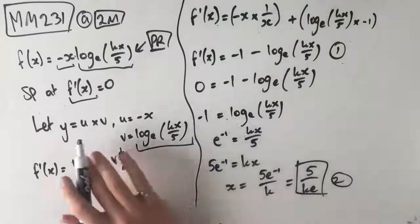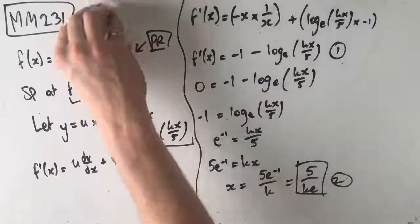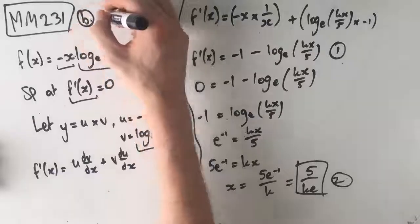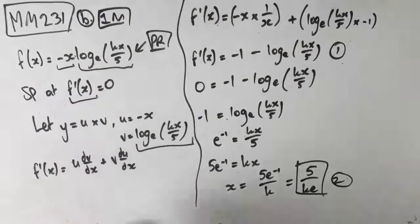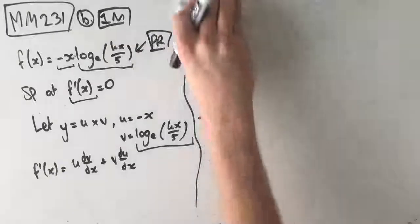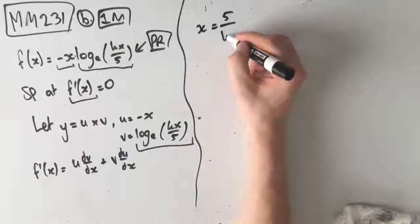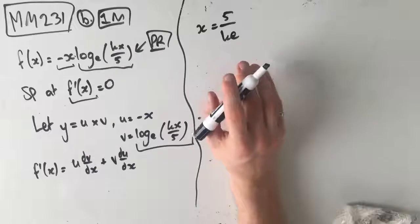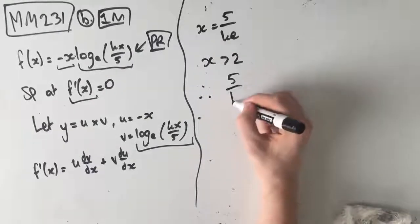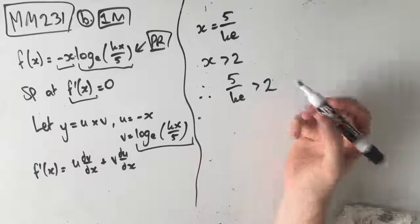Part b asks us to state the range of values of k such that the x-coordinate of this stationary point is greater than 2. This is just one mark. We know the stationary point occurs at x equals 5 on ke. If we want the x-coordinate to be greater than 2, that means x is greater than 2, therefore 5 on ke is greater than 2.